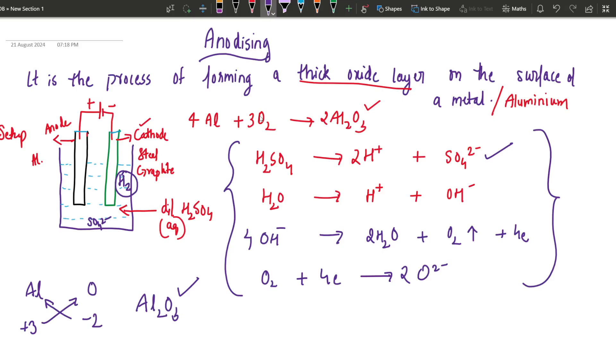You don't have to write all these equations in your tenth grade if it is asked. You just need to write oxygen gases will evolve that can react with aluminum to form aluminum oxide. And remember this setup. So this is the anodizing procedure of aluminum.